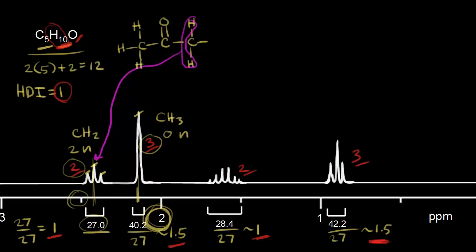Let's make these protons blue. These three blue protons are giving us this signal. We expect zero neighboring protons: those protons are on this carbon, and the next-door carbon has no protons on it, so zero neighboring protons makes sense.